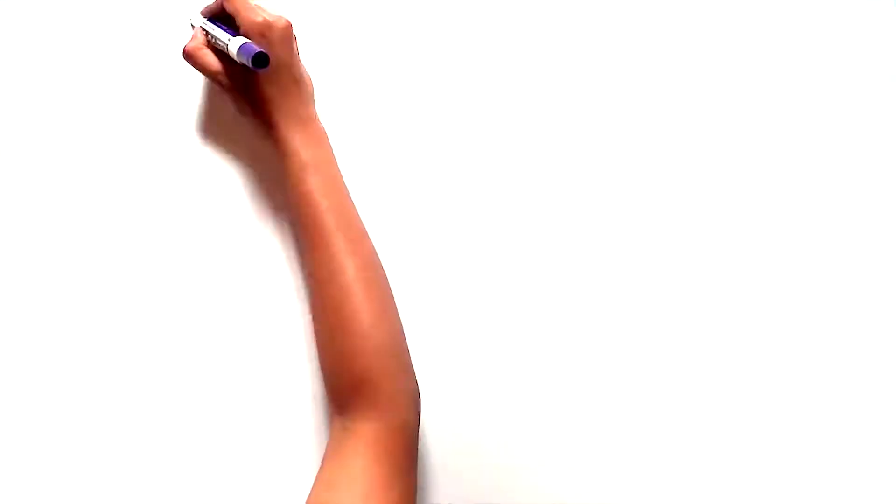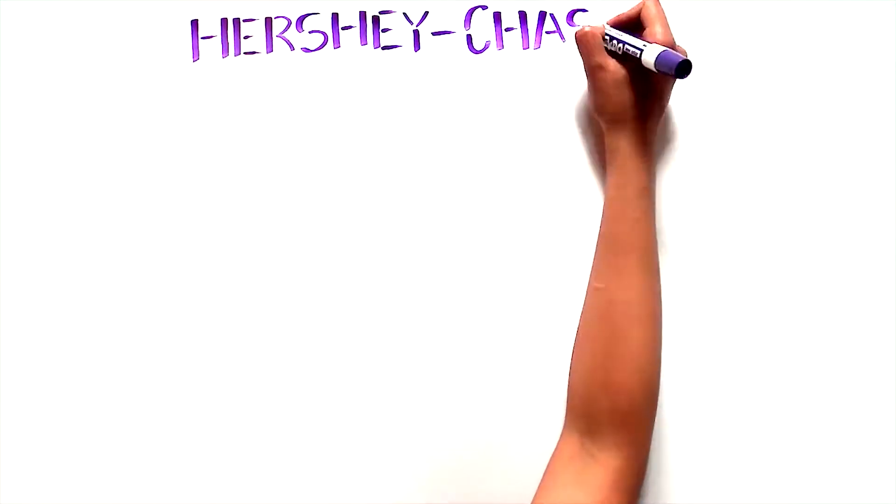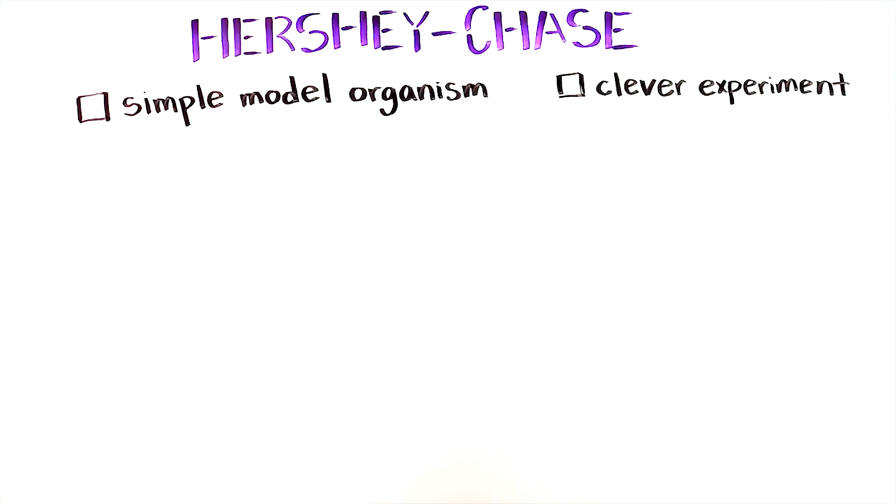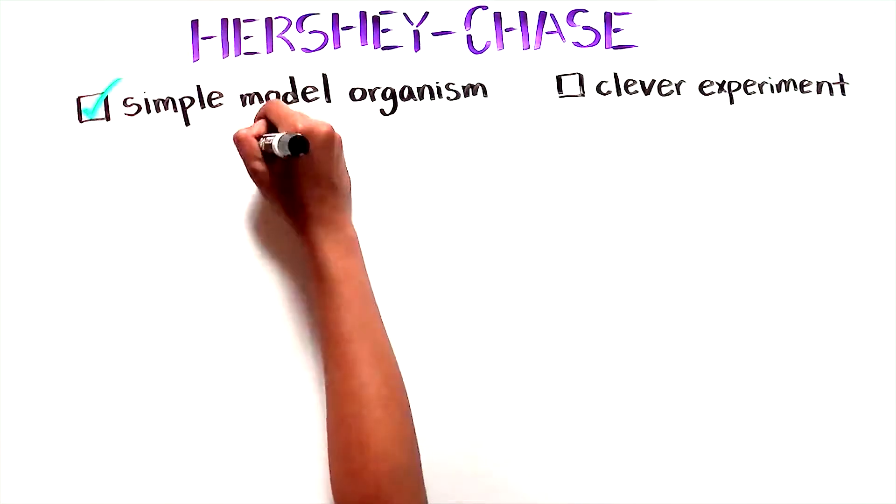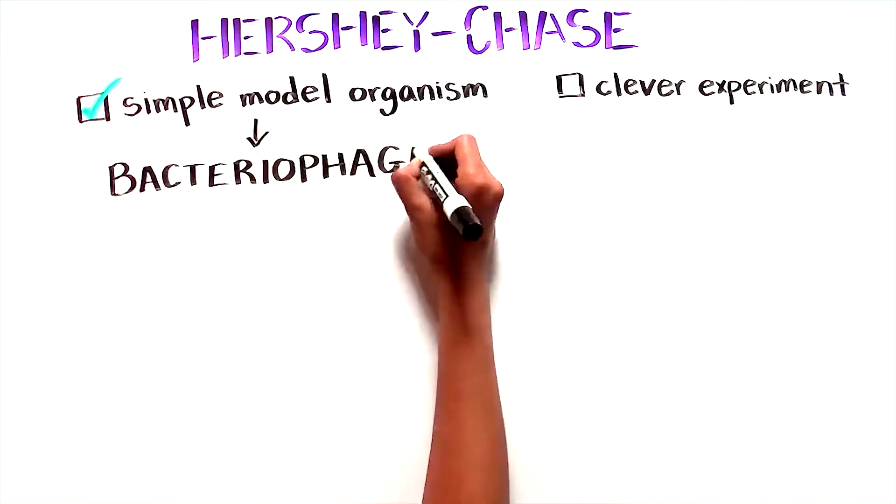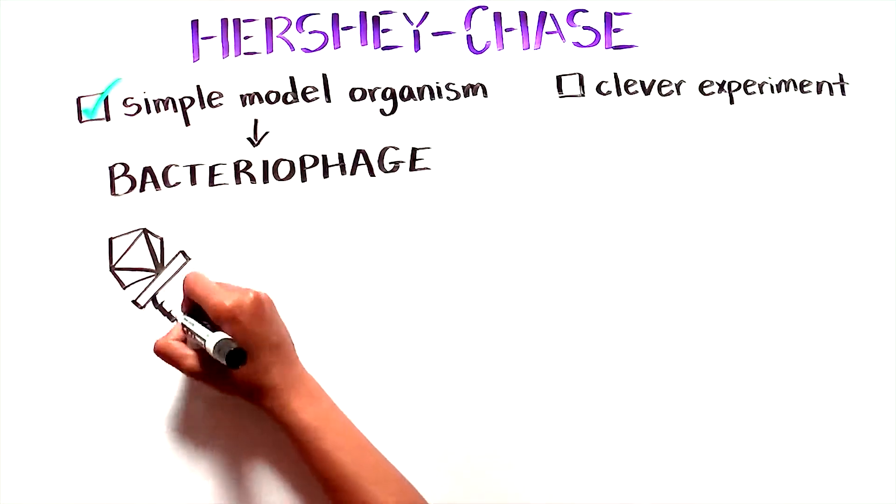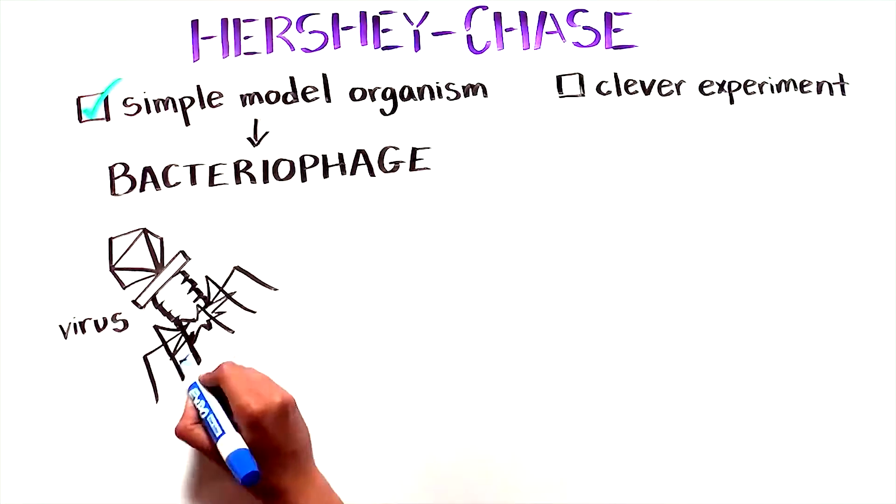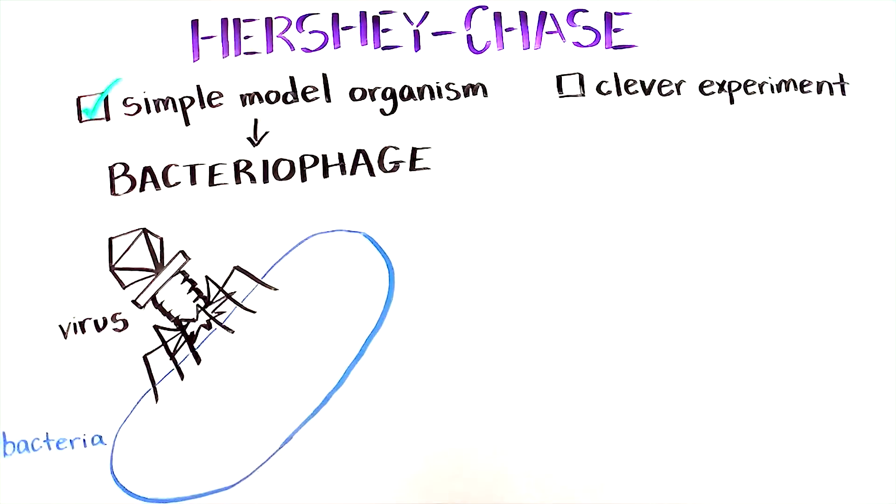To solve this important puzzle, Hershey and Chase needed a simple model organism to solve this complex question, and a clever experiment. They chose the simplest organism possible, a bacteriophage, which is a virus that infects bacteria. This virus looks a bit like a lunar landing module and attaches to the outside of the bacteria.